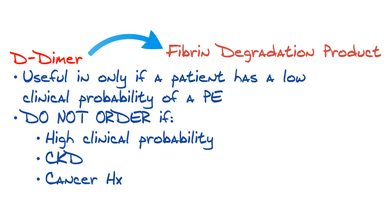Avoid the D-dimer in patients with chronic kidney disease, because to clear fibrin degradation products you need good kidney function — these patients will retain them and their D-dimers will generally be high. For patients with a cancer history, their Wells score is probably going to be greater than four anyway, so keep the clinical situation in mind when ordering a D-dimer and assess whether it's appropriate.